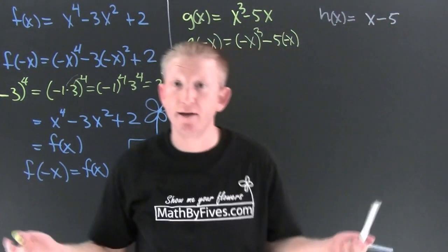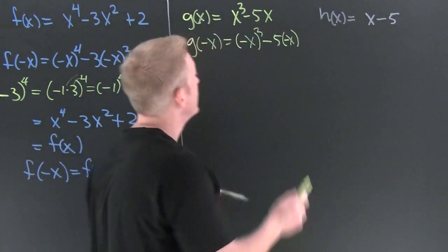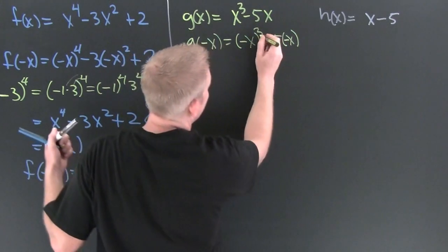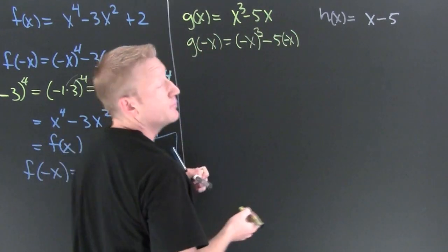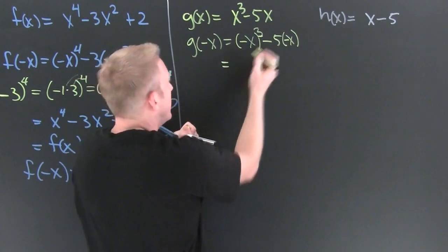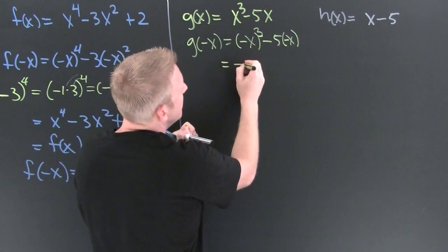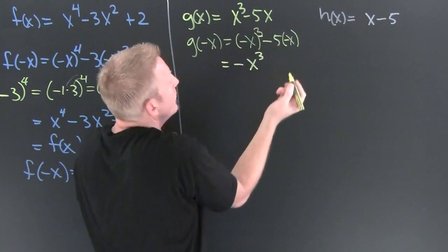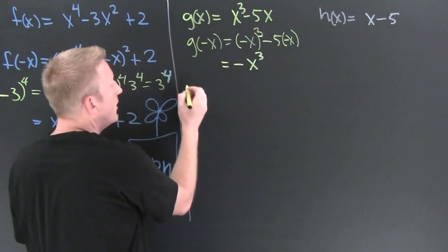So take a look at this. For the same reason on the evens, the odd exponent is going to pass the negative out. I want to pass out. Maybe you wanted to see it. No. Okay. I'm not. This is going to be minus x to the third.